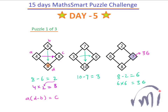First we found the difference between 8 and 6, which was 2, and that difference gets multiplied by the number written at this box, giving us the value in the box directly opposite. Similarly, 10 minus 7 was 3, and this 3 gets multiplied by this 3 to give 9. Following the same logic, the value of the question mark is 36.